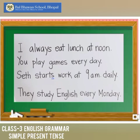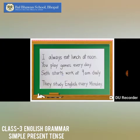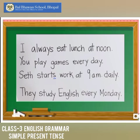The second example says: 'You play games every day.' Do you see the clue that helps you know this is something that happens regularly? It's 'every day' — so it's something that happens as a routine or a habit. The verb here is 'play.' The next example says: 'Seth starts work at 9 a.m. daily.' Again, this is something that happens regularly — Seth goes to work at 9 a.m. every day.